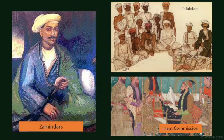The zamindari system introduced put the farmers into great hardship. The talukdars who were earlier collecting revenue had that right abolished. By forming an in-arm commission, all the in-arm or gifted lands were withdrawn by the British government.